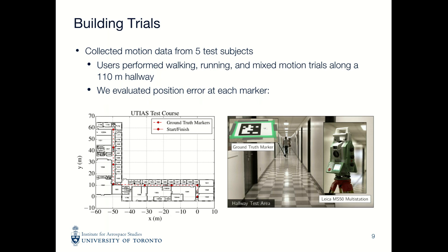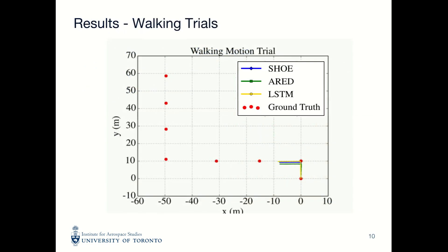To further evaluate our proposed system, we collected a test set consisting of motion trials from five different test subjects within the hallways at the University of Toronto. Users performed walking, running, and mixed motion trials along a 110m hallway, and we evaluated the position error at several reference markers along the trajectory. In this walking trajectory, we can see that our LSTM-based zero velocity classifier, represented by the yellow trajectory, is much more accurate than the trajectories generated using the fixed threshold detectors.